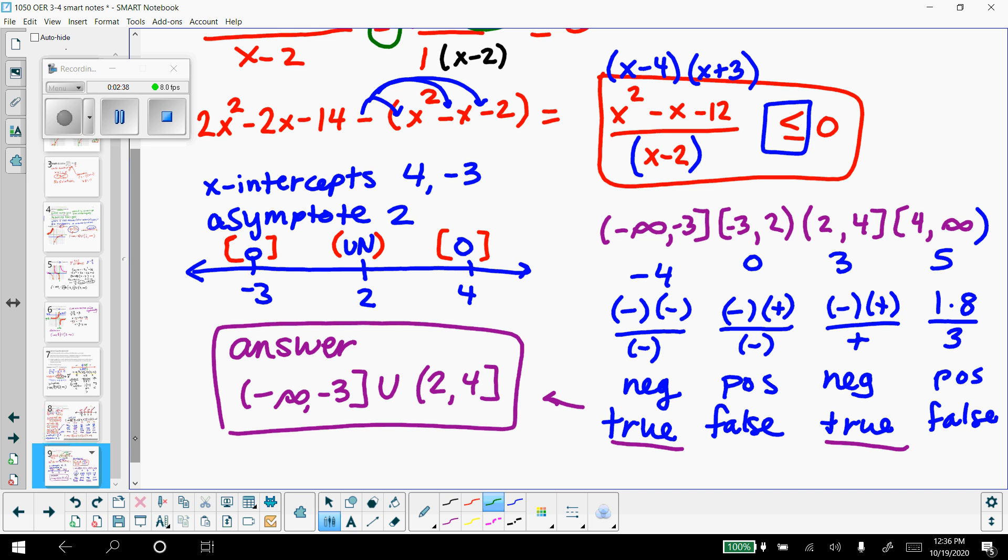I plug in a test value of 5, and I get a positive value, which is false, because we want less than or equal to 0. So then our solution are the intervals that are negative, because less than or equal to 0.